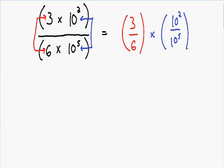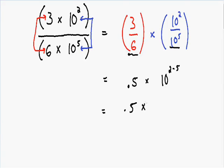So now let's simplify our expression. In red, we have 3 over 6, which is 1 half, and 1 half is equal to 0.5. In blue, we have two exponents with the same base being divided. Whenever you're dividing, you can simplify by subtracting the exponents. So we have a base 10 and we subtract the exponent of 5 from the exponent of 2, giving us 0.5 times 10 with 2 minus 5 in the exponent. 2 minus 5 is equal to negative 3.